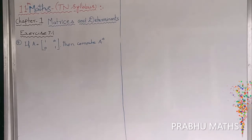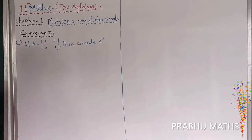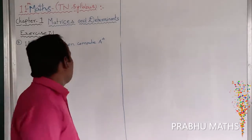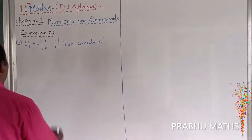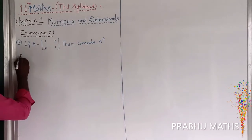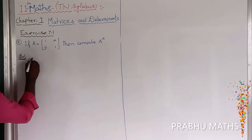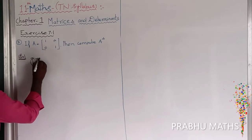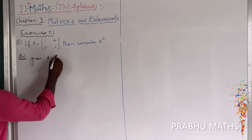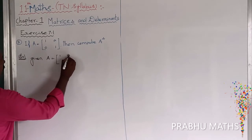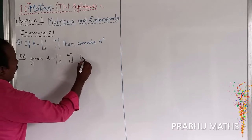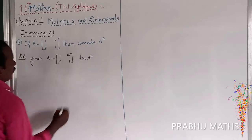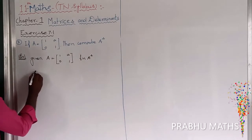Question: if A is equal to [[1, a], [0, 1]], then compute A power 4. So the given matrix A is equal to [[1, a], [0, 1]]. Next, find A power 4. First of all, to find A square.